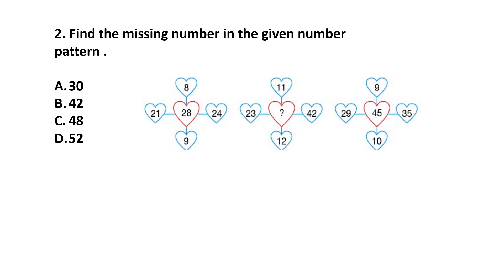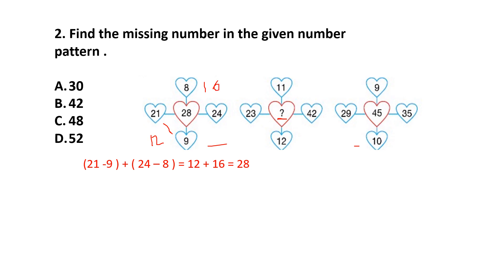Kids, these patterns are given and we have to find what will come at this place. There is a certain relationship between these numbers. If we subtract 21 minus 9, we get 12. And 24 minus 8 is 16. If we add 12 plus 16, we get 28. This is the number written here.